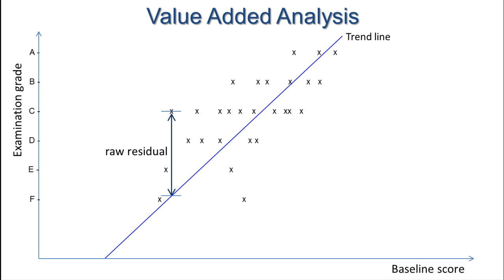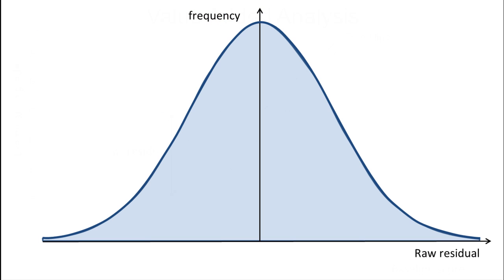Well, it means that if we collate all our raw residual data and plot residual on a graph against frequency, we get something that looks like this. This classic bell-shaped curve is very useful because it is well behaved and well understood statistically.